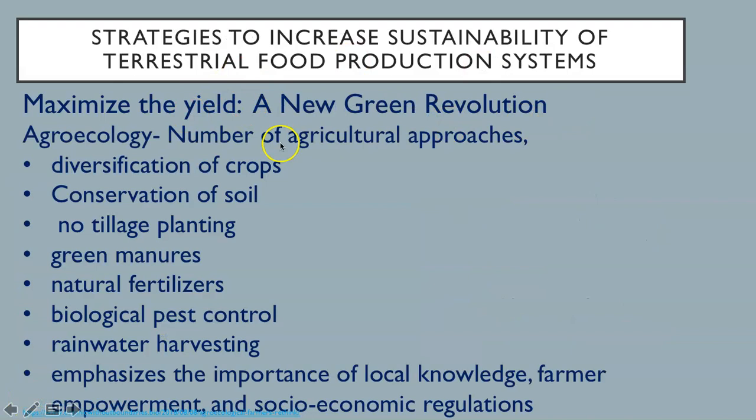A new green revolution — agroecology — incorporates a number of agricultural approaches, including the diversification of crops, the conservation of soil, no-tillage planting, green manures, natural fertilizers, biological pest control, and rainwater harvesting. It also emphasizes the importance of local knowledge, farmer empowerment, and socioeconomic regulations.